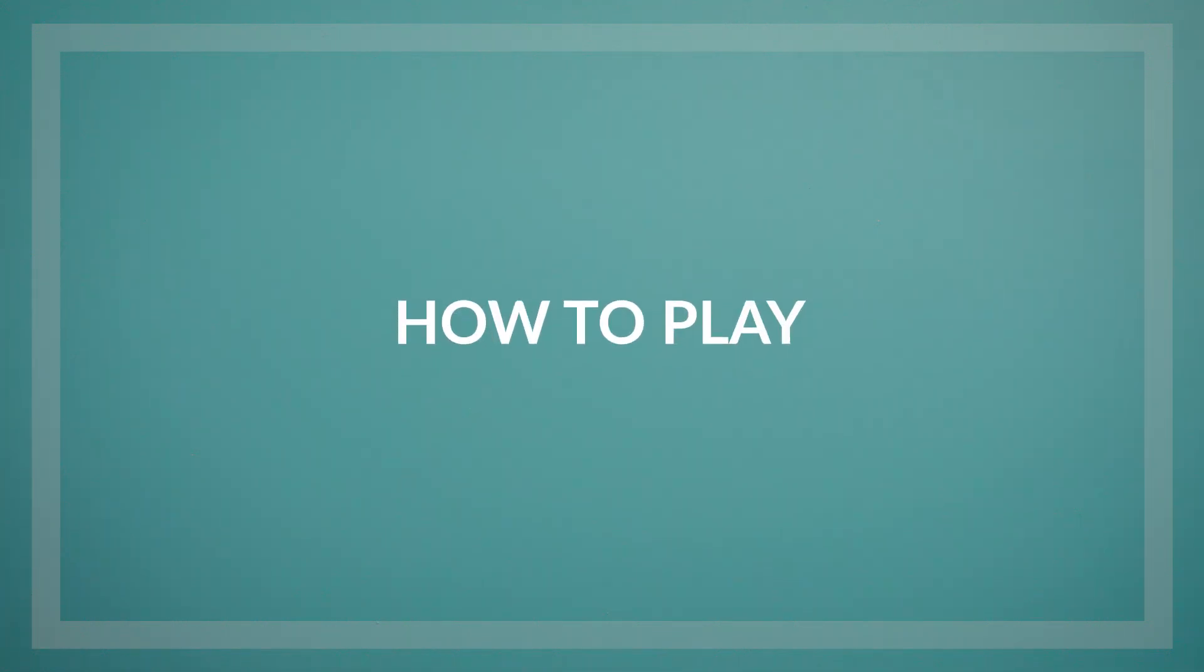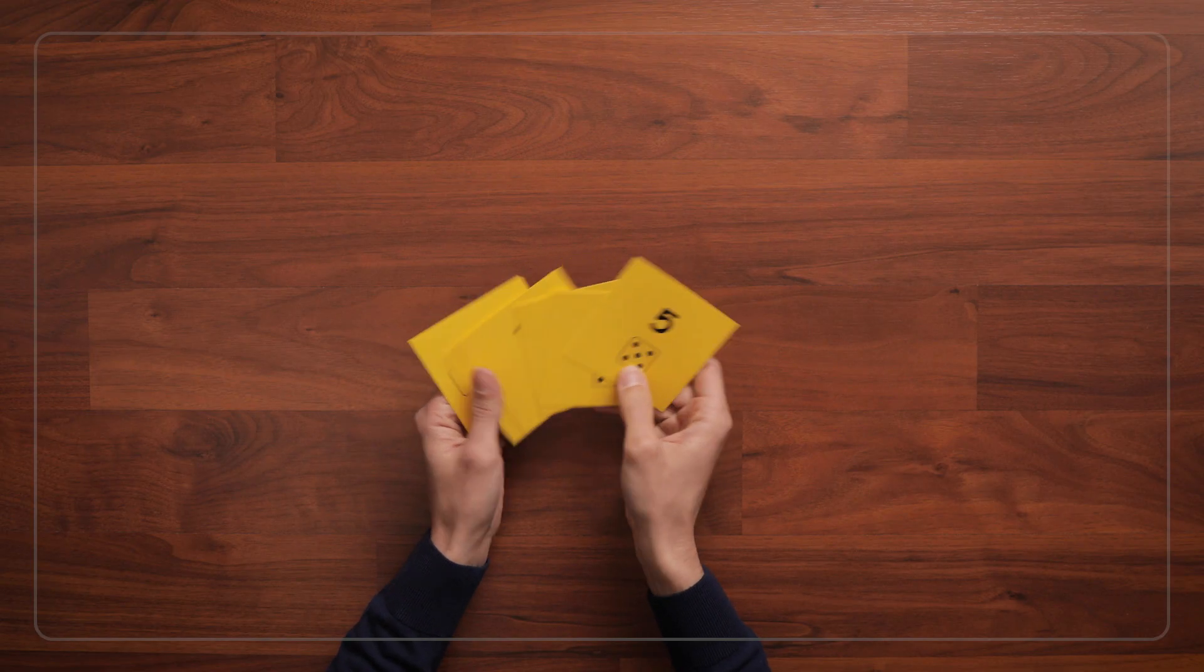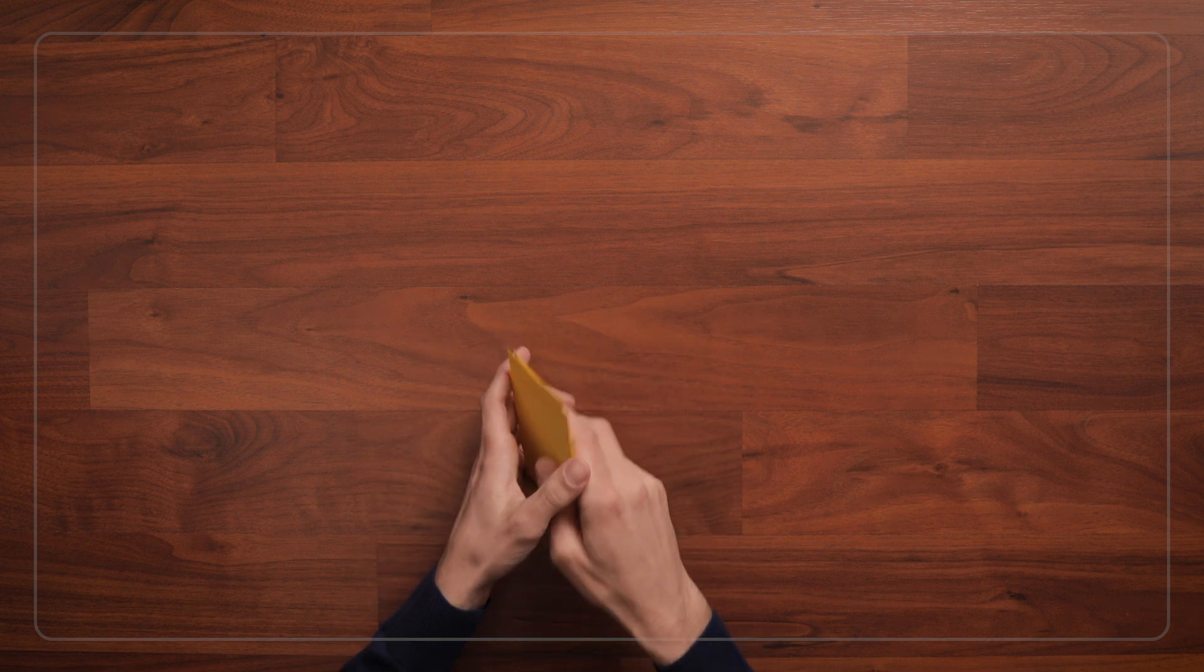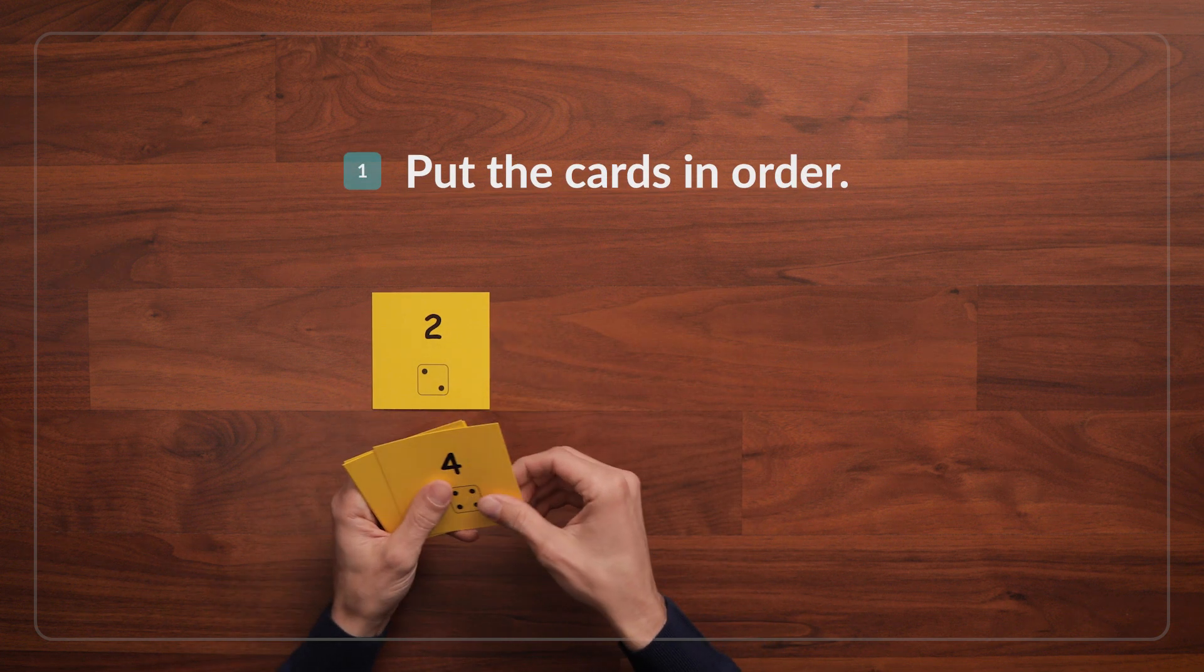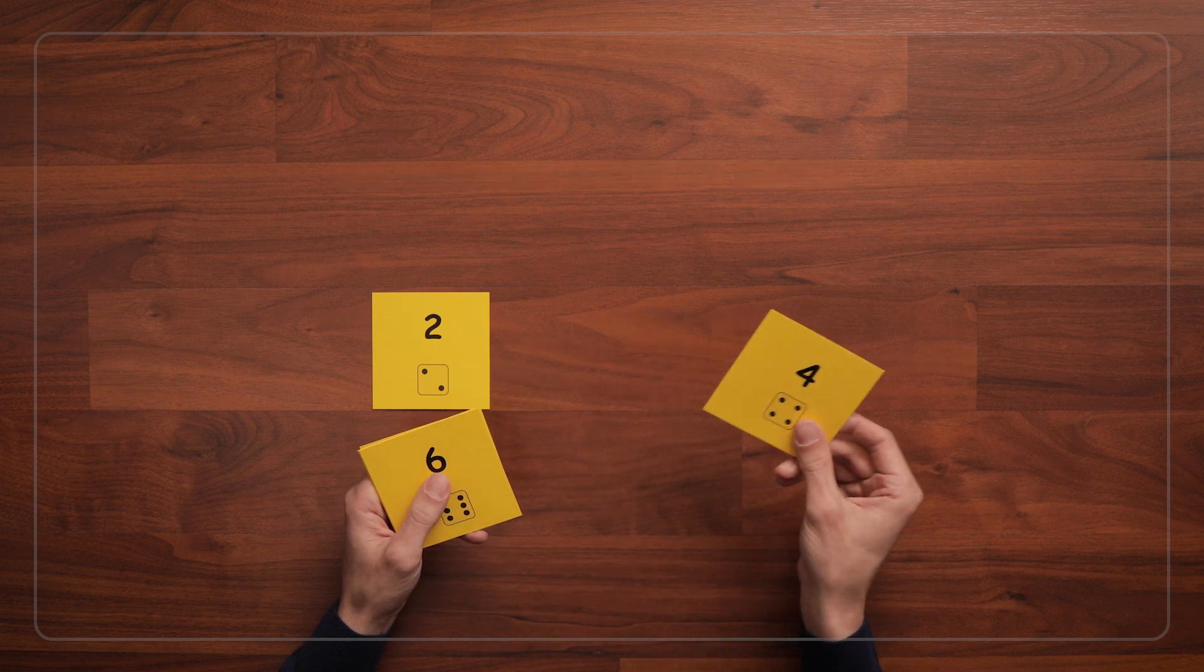To get started playing Roll 1, gather a set of cards numbered 1 through 6 for each player. Then shuffle the cards and ask each child to put their set in order from 1 to 6. See what you can notice while they do this.